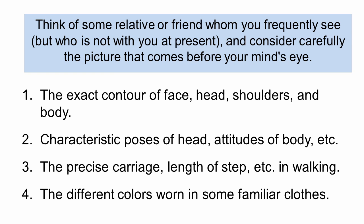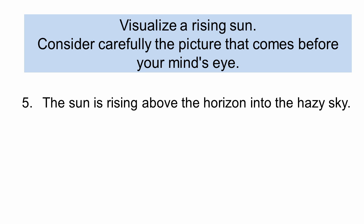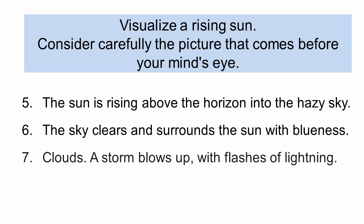For items five through eight, imagine that you are seeing a rising sun. Number five: you see the sun rising above the horizon into a hazy sky. Number six: the sky clears and surrounds the sun with blueness. Number seven: a storm blows up and there are flashes of lightning. Number eight: finally, a rainbow appears.